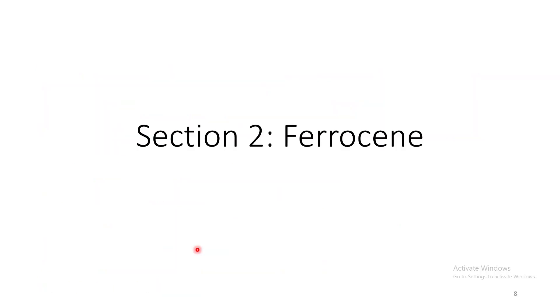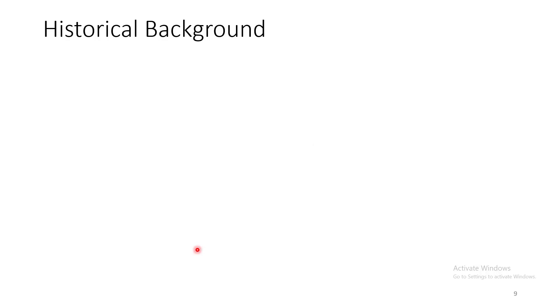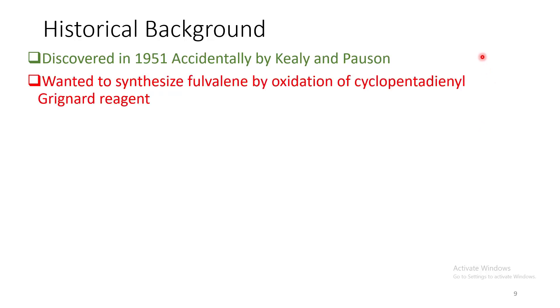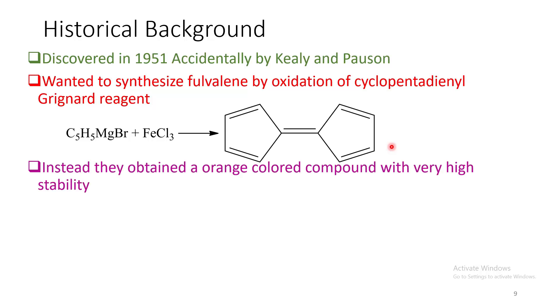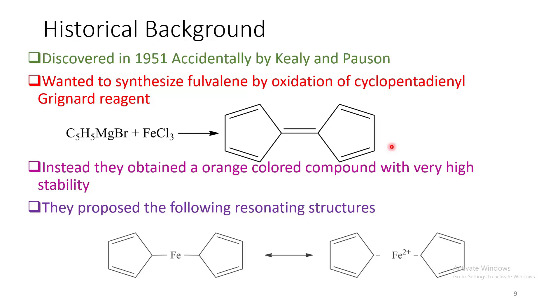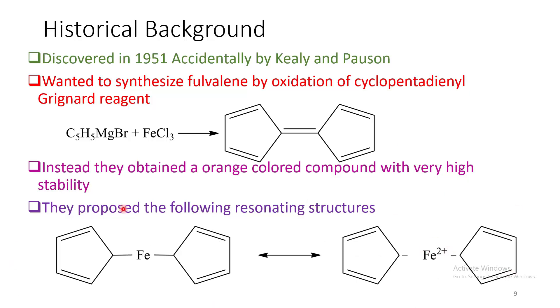Now we come to the next section. Let us concentrate more on the most popular sandwich complex that is ferrocene. Let us come to the historical background of this complex. It was discovered accidentally by Kealy and Pauson. They wanted to synthesize fulvalene, which is an organic semiconductor, by oxidizing cyclopentadienyl Grignard reagent by this reaction. They expected a colorless compound to form. But instead, they obtained an orange-colored compound, which is having a very high air as well as thermal stability. So by this color, they have guessed that that compound has to contain a metal. So they proposed the structure as combination of these two resonating structures. These are ionic form and metal-carbon single bonded complex.